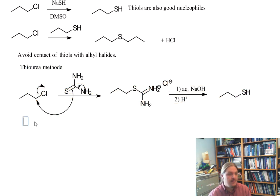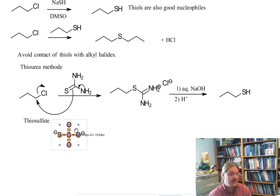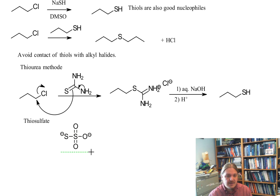Another method is the thiosulfate method. So thiosulfate is this anion here. It's like a sulfate anion except one side of it has this extra sulfur instead of one of the oxygen atoms. And it turns out that thiosulfate is also a decent nucleophile and can displace chlorine and other halogens in an SN2 reaction.